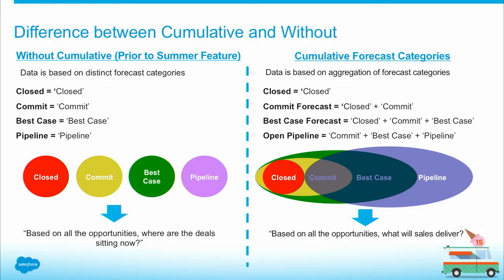So basically, close means closed. When we say commit forecast, it means a combination of close plus commit. When we say best case forecast, it's a combination of close plus commit plus best case. The last one is a little different — we call it open pipeline. It's basically commit plus best case plus pipeline, so without close, to let the reps and managers know how much pipeline is there to work with to get to that closing number. I drew a bubble here to show the overlap data. This is very good at telling you, based on all your opportunities, what will sales deliver. So if you forecast based on this, I recommend the preference on.